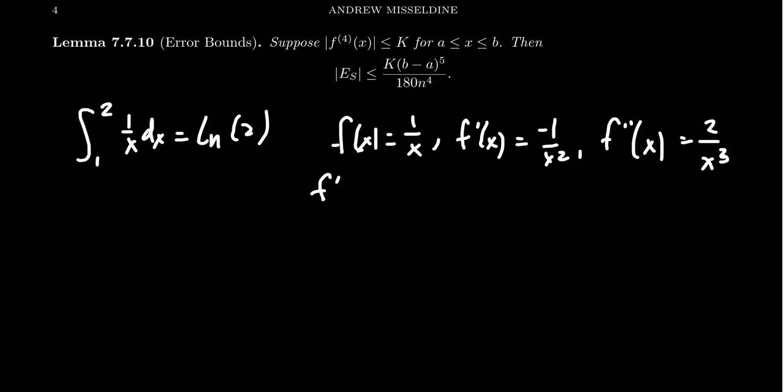If we continue on, the third derivative you're going to get is negative 6 over x to the fourth. And then finally, the fourth derivative, which is the one we need, the one we're worried about right now.